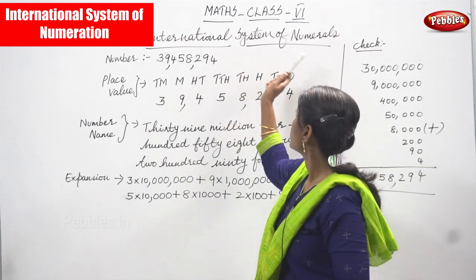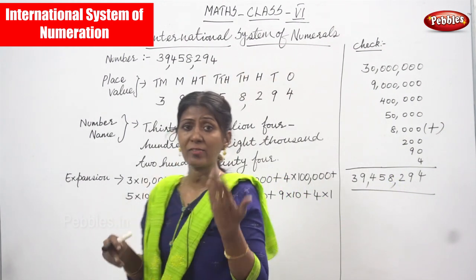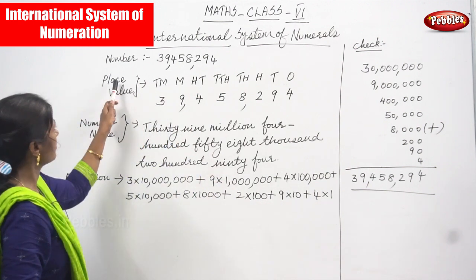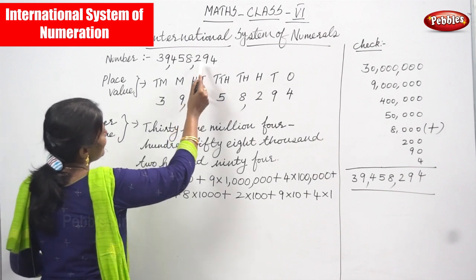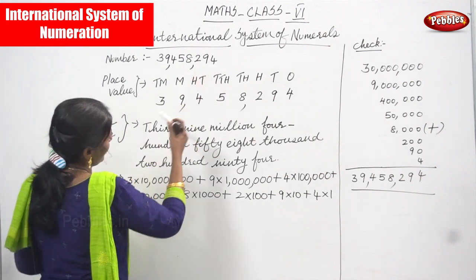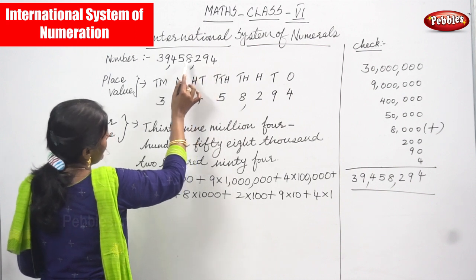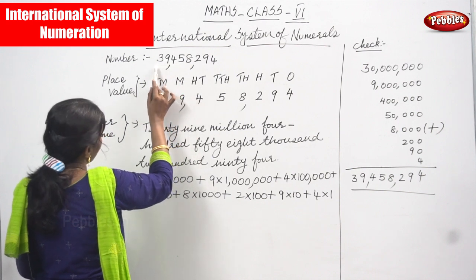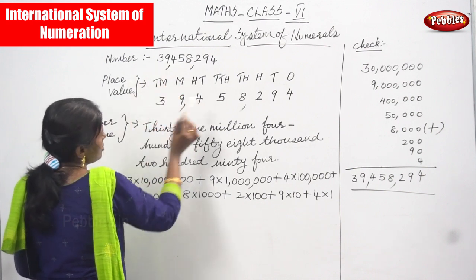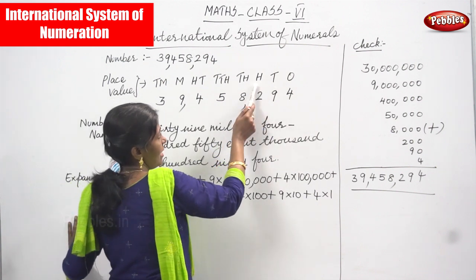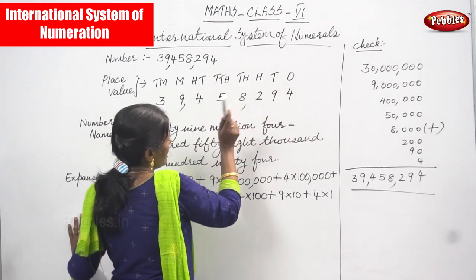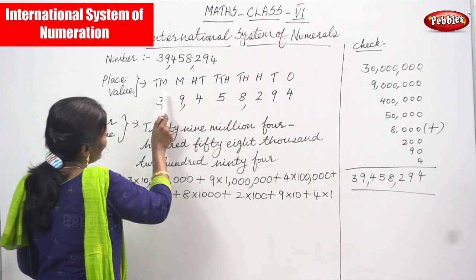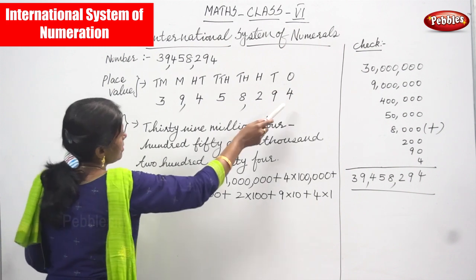Now we are going to see the International System of Numerals. We have already seen the Indian System of Numerals. So the place values are: ones, tens, hundreds, thousands, ten thousands, hundred thousands, millions, and ten millions. O means ones, T means tens, H means hundreds, TH means thousands, TTH means ten thousands, HTH means hundred thousands, M means millions, and TM means ten millions.